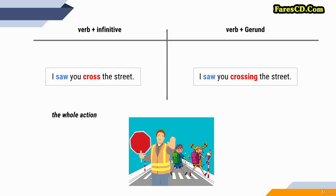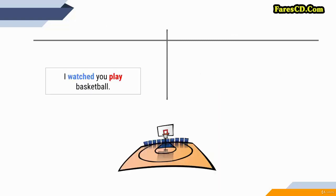So what's the difference in meaning? In the first case, I saw you cross — you see the whole action, from the beginning to the end. In the second case, I saw you crossing — you mean that you saw just part of the action. When you use a verb of senses plus infinitive, you mean the whole action. When you use it plus gerund, you mean part of the action.